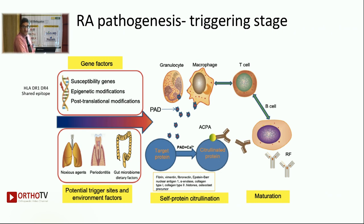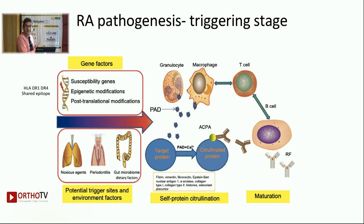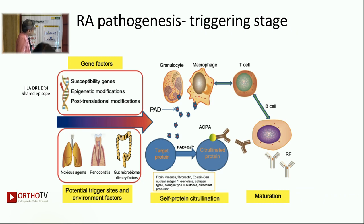Where does this breach of tolerance really happen? One: in the lungs — smoking has been shown to be a very important, and now known, risk factor for developing rheumatoid arthritis. Secondly, periodontal infections are again known to be a predisposing factor for rheumatoid arthritis. And lastly, gut microbiome dysbiosis. All these environmental triggers — smoking, periodontal infections, and gut dysbiosis — cause something called citrullination of peptides in the body.